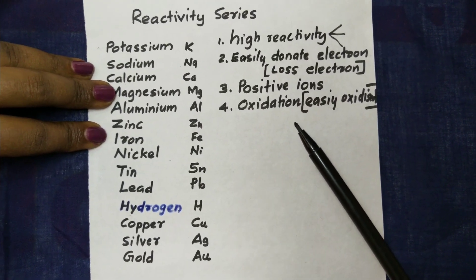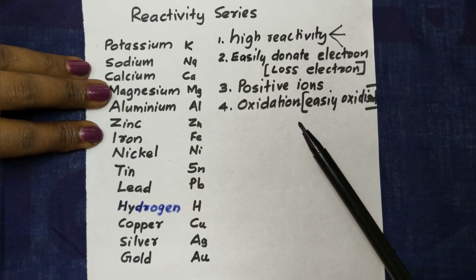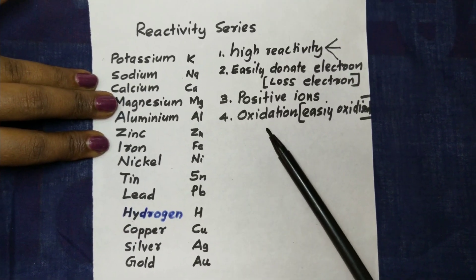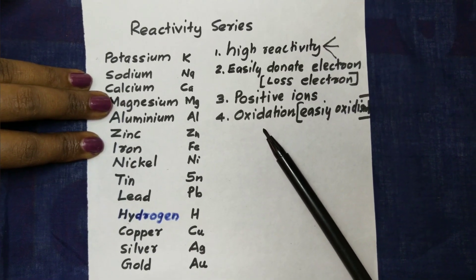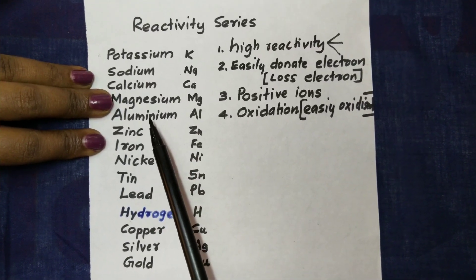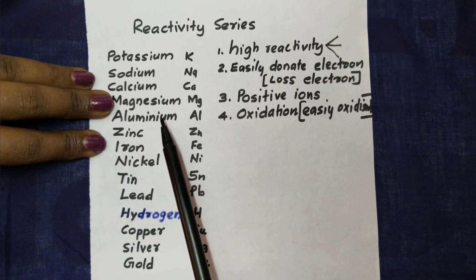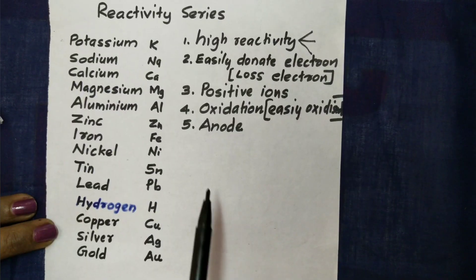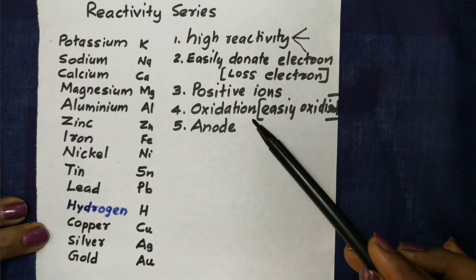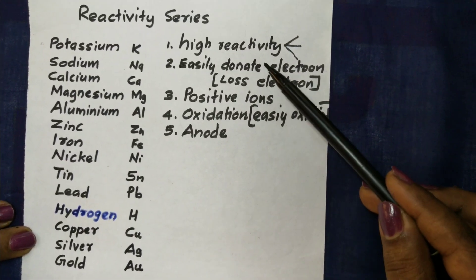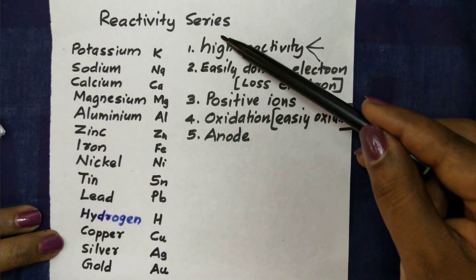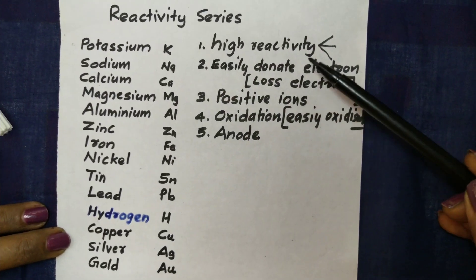In an electrochemical cell, there are two processes: oxidation and reduction. The anode is where oxidation occurs. Elements at the top of the reactivity series have the property of high oxidation tendency. The top elements have low reactivity with water and air in terms of reduction — they are associated with the anode.